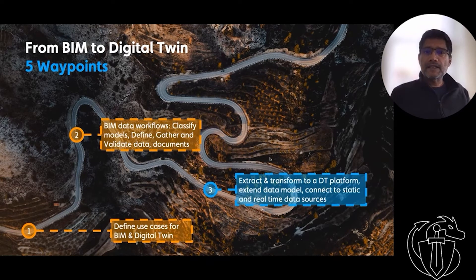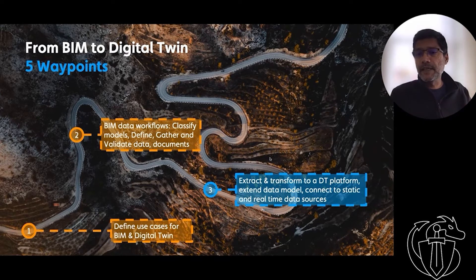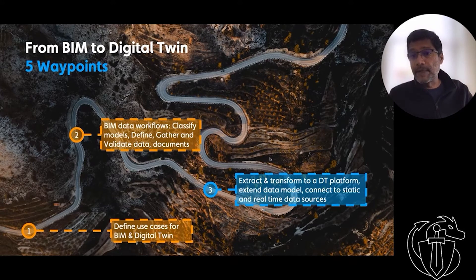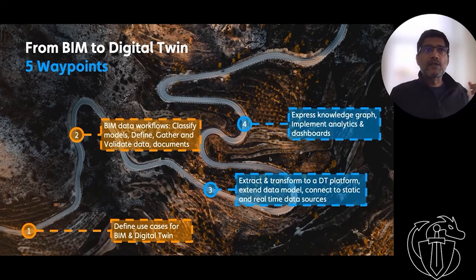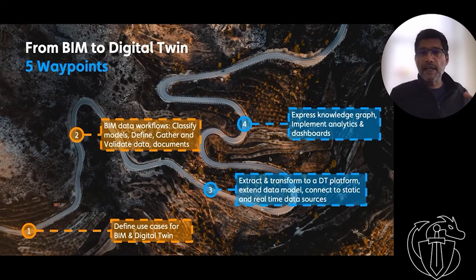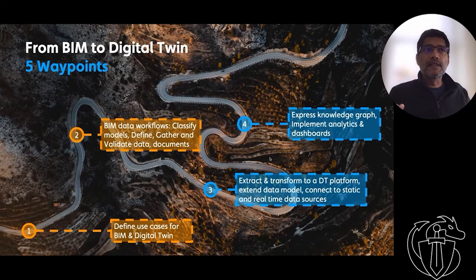Once you have done that, we can then extract and transform the graphics, the data, and the documents into a digital twin platform that allows us to extend the data model and start connecting it with data sets outside the realm of BIM. It could be BMS, IoT systems, enterprise applications. So you start bringing real-time data sets into the twin and that makes the twin data set more complete. From a digital twin point of view, it's vital to start expressing these data sets as knowledge graphs. A knowledge graph is like how a social media platform knows everything about everybody — who you are, who you're connected with, when you went to a restaurant and at what time. Likewise, a digital twin needs to have context about what is what in an asset, all the relationships between those entities and the data relating to that. We are then able to build analytics and dashboards to drive the outcomes we are targeting to achieve.